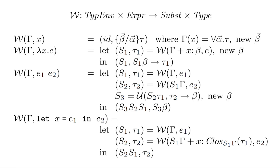So what is this definition telling us? At the top we see W colon type env to expression to substitution times type. This is saying we have Algorithm W, which is our type inference algorithm. The inputs are a tuple of a typing environment — a context — and an expression. It returns a tuple of a substitution, which is a mapping from type variable to type, and also a type. This is essentially our function signature for Algorithm W.